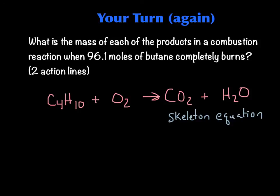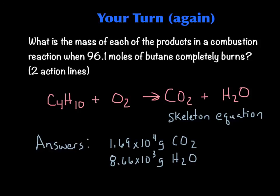Once again, I've given you a skeleton equation. This is butane — C4H10 — and this is the combustion of butane. Notice it is a skeleton equation, which means you have to balance it first. You always have to balance it, and even if it ends up being a one-to-one ratio, we need to know by balancing it. This one is going to require two action lines. 96.1 moles of butane is what you're starting with for each one. I want to know the mass of CO2 you can get, and then a separate action line for the mass of H2O. I've put the answers at the bottom for you to check — these are in the correct number of sig figs and scientific notation. Good luck.